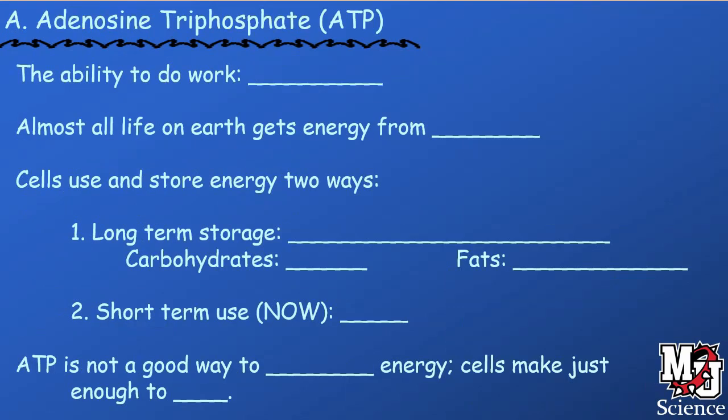We're actually going to start at the end of this, because I think the important question is: why is this important for us to learn? The important part is that in the end we need energy, and that energy is in the form of something called adenosine triphosphate. Adenosine triphosphate is a form of energy, and energy is the ability to do work. Anytime we want to move something, flex our muscles, or our heart beats, or the lungs expand and contract, our cells need energy in order to perform that.